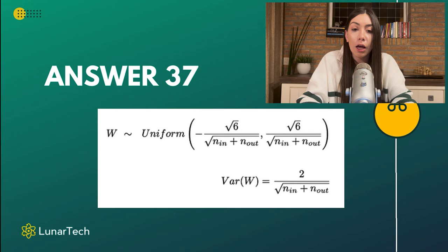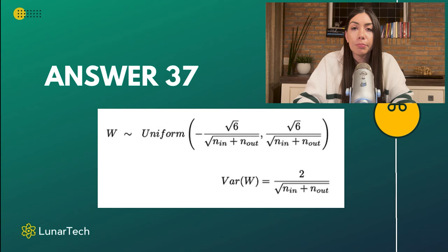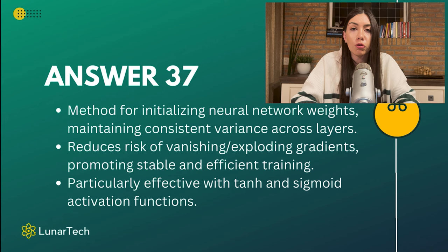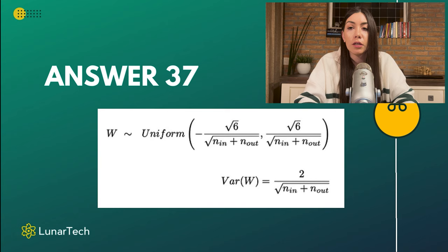One way that Xavier initialization tries to stabilize the network and keep the gradients as well as the activations consistent and stable is by using certain statistical distributions with qualities that ensure the variance of the weights is constant. We want to sample our initial weights from a distribution defined using n_in and n_out combined with a statistical distribution.